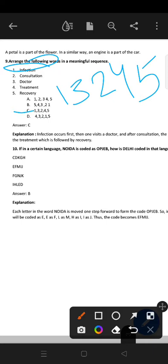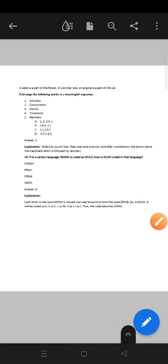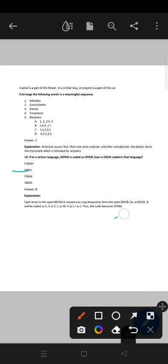Now, in a certain language, Noida is coded as O, P, J, E, B. How is Delhi coded in that language? So just after N, which alphabet is coming? N, O. And after O, which alphabet is coming? O, P. I, J. D, E. A, B. So you have to just decode Delhi also. So just look at this structure. After N, O is coming. So D, E. E, F. L, M. H, I. And after I, J should come. So option B is correct. So each letter in word Noida is moved one step forward from the code O, P, J, E, B. So it will be coded as E, F, M, I, J.